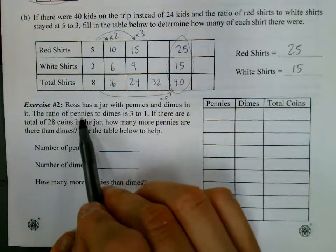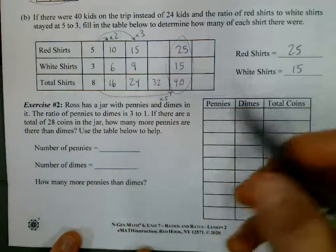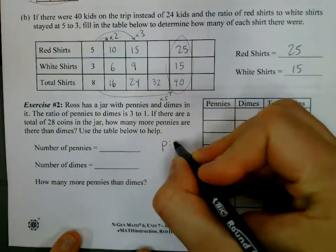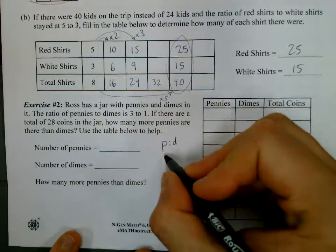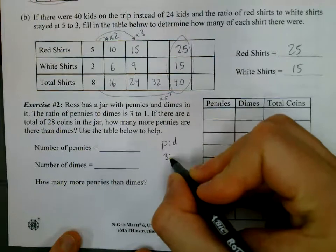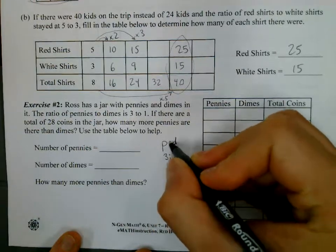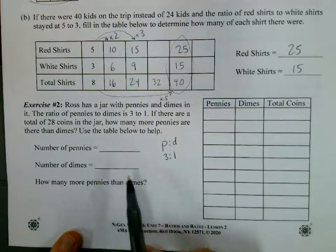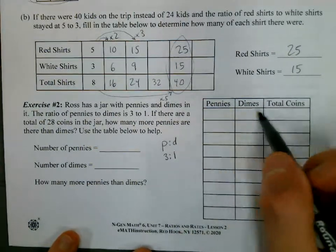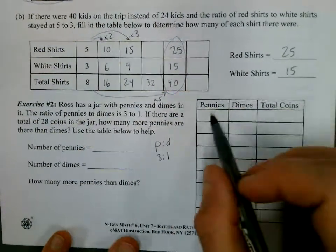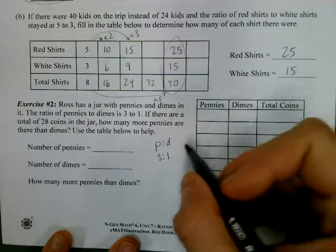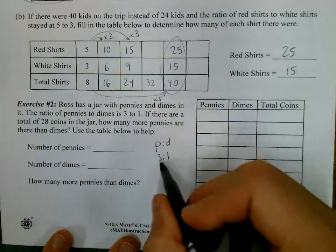The ratio of pennies to dimes is three to one. So I'm going to write that pennies to dimes, p to d, is three to one. And the word 'to' we just write a colon for. So I'm going to start using this table over here. And you can see in this case now we're going by a row. So each row goes together. So I can use these numbers here to start with.